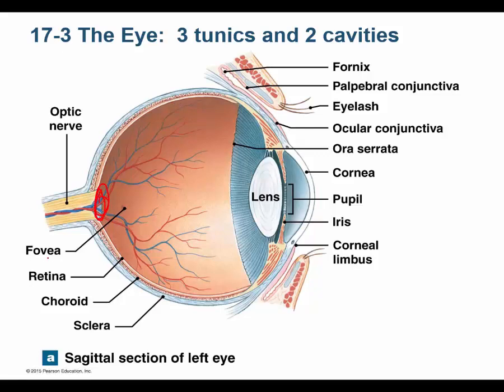There's a blind spot where the optic nerve leaves the back of the eye — it is the area of the eye that doesn't have rods and cones. We'll talk about that in a little bit.